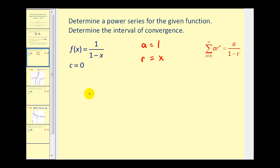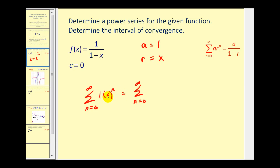The geometric series that represents this function is the summation from n equals zero to infinity of a, which we identified as one, times r to the power of n — but r is equal to x. We can simplify this to the summation of x to the power of n.